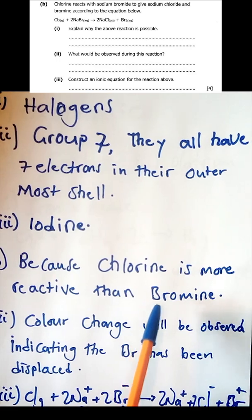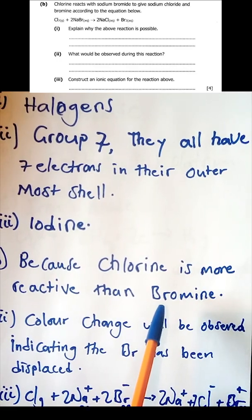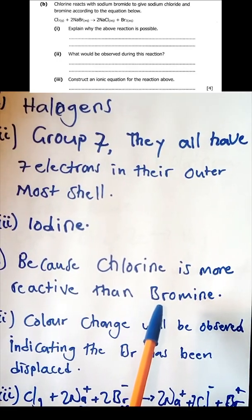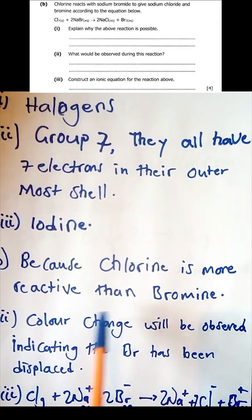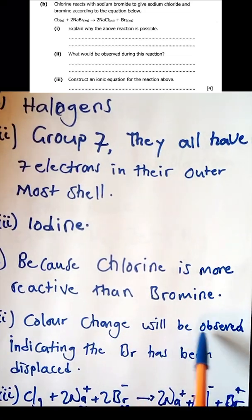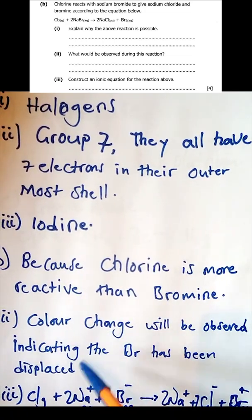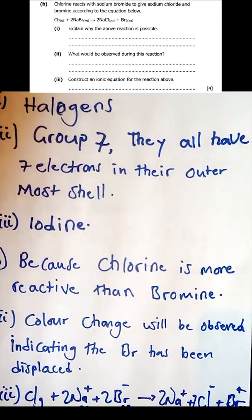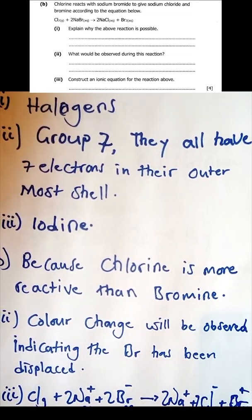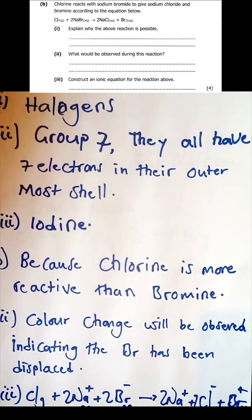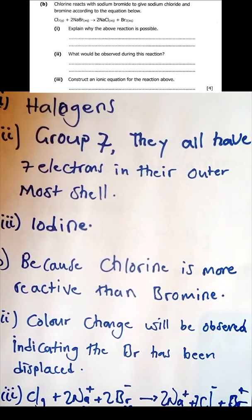What would be observed during this reaction? In order to tell that the reaction has taken place, we are going to observe a color change, indicating that bromine has been displaced.